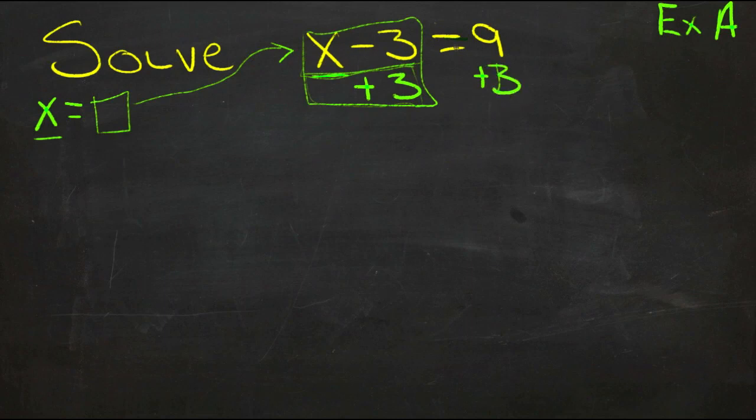If x minus 3 is the same thing as 9, then x minus 3 plus 3 would be the same thing as 9 plus 3.